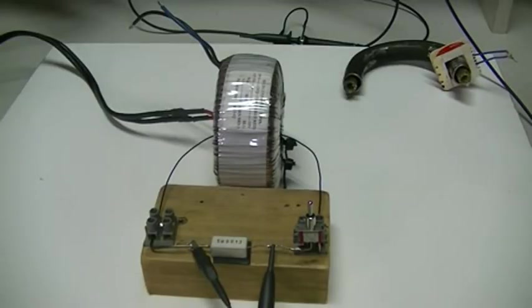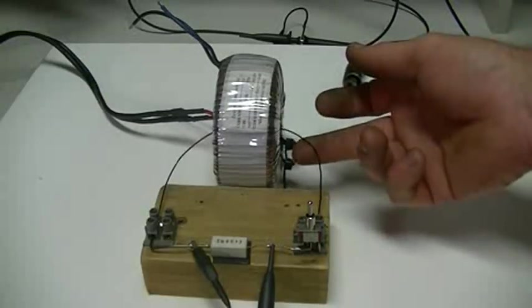In this video we're doing a little more experimenting with our single loop through our toroid transformer, which is this small piece of copper wire here.